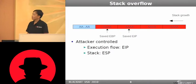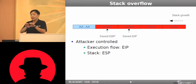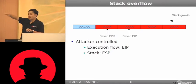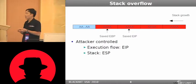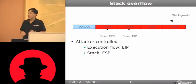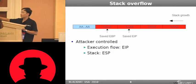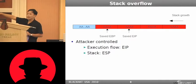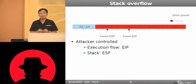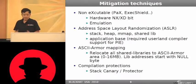So how does stack overflow happen? The attacker puts in a lot of data larger than the buffer size, so some saved values on the stack will be overwritten. An important note about stack overflow: when the overflow happens, the attacker can control the execution flow — specifically the saved EIP register — and the attacker can also control the stack pointer.